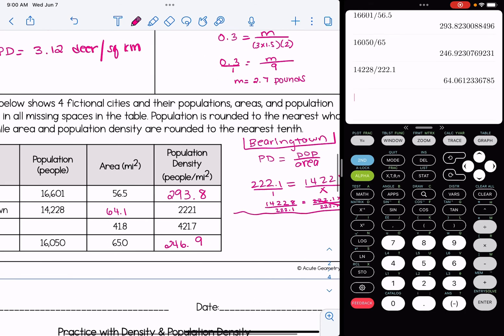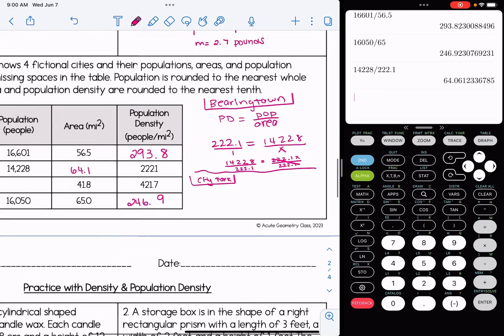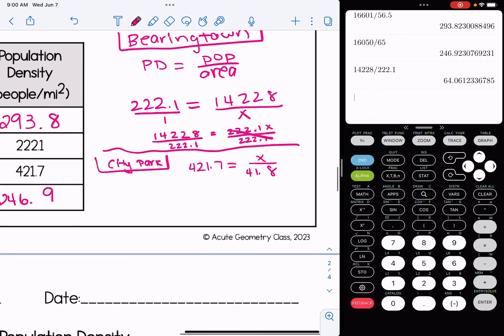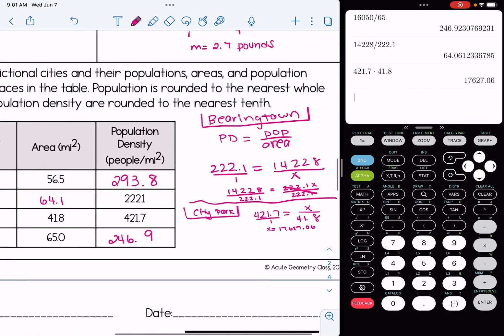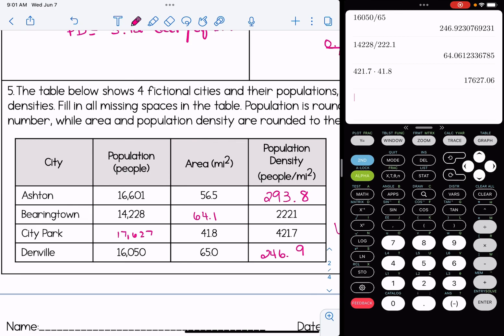All right, I have one more calculation to do, and that is for City Park. For City Park, we are not given the population. We are just given the density and the area. So the density is 421.7. The population I don't know, so I'm going to put X there over 41.8. I will zoom back in here. Put the other side over 1, cross multiply. You'll see X is already isolated here. So 421.7 times 41.8 gives us 17,627.06. It tells us that population is rounded to the nearest whole number. So my population in this case is going to be 17,627. And now we have completed the table for the four fictional cities. Hopefully this video helped you understand how to work with density and population density.